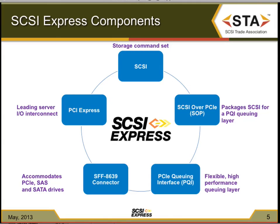Additionally, there is the SFF-8639 connector, which is a multi-function connector that allows you to have, on the same connector, PCI Express up to four lanes, SAS two lanes, and SATA devices. This allows up to six lanes of traffic — two dedicated to SAS and SATA, four dedicated to PCI Express — in a common backplane slot.